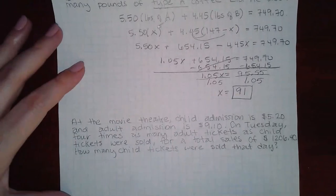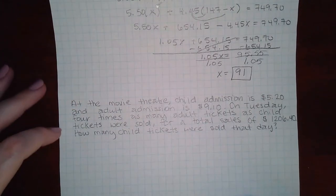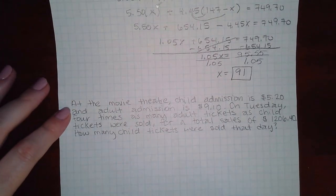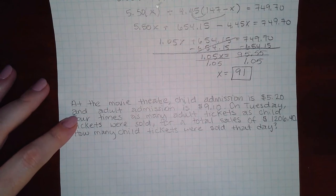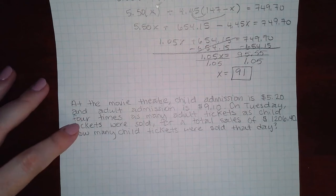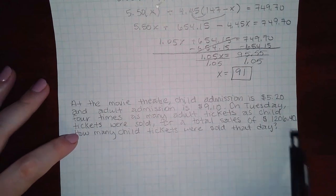Now I have another example. So it says at the movie theater, child admission is $5.20 and adult admission is $9.10. On Tuesday, four times as many adult tickets as child tickets were sold for a total sales of $1206.40.